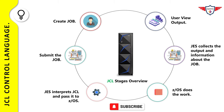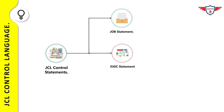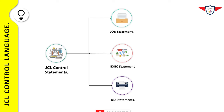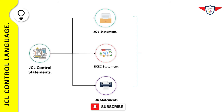JCL is used to convey information to ZOS through a set of statements called Job Control Statements, of which there are three kinds. First is the Job Statement, which marks the beginning of a job and provides vital information related to your shop. The second is the Execute Statement, which marks the beginning of a job step and specifies the program name or proc to execute. The third is the Data Definition (DD) Statement, used to provide information related to input and output datasets.